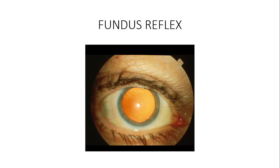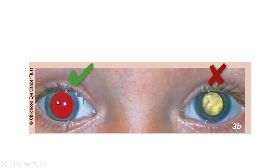The examiner stands at an arm's length away from the patient. The best way to establish this distance is to put your left arm on the patient's forehead and then step back until you just touch the patient's forehead. Put the ophthalmoscope light on — using the large light for a dilated pupil — and ask the patient to look at a target straight ahead. You will then see what we call the fundus reflex.